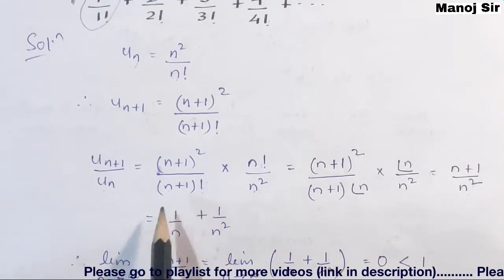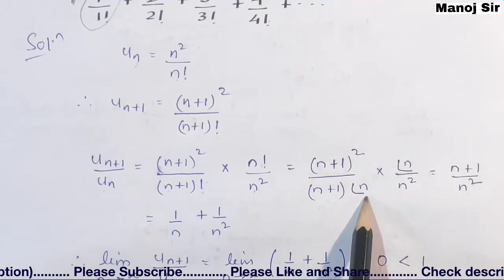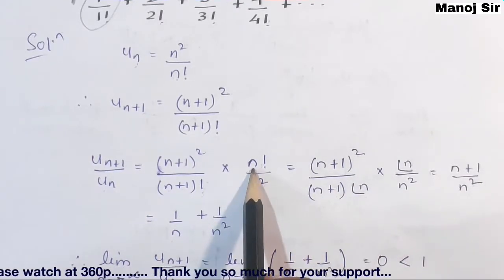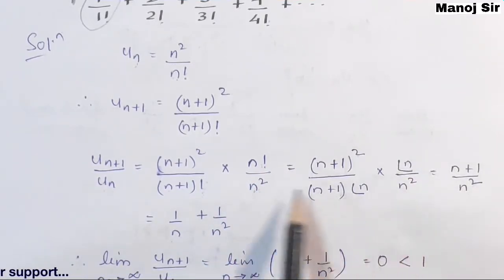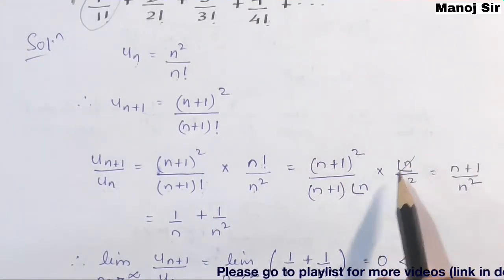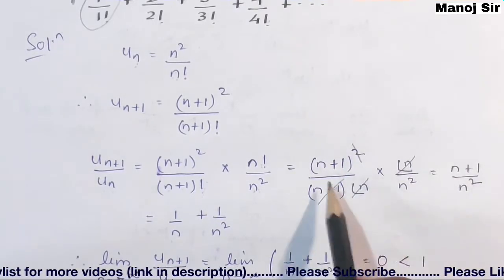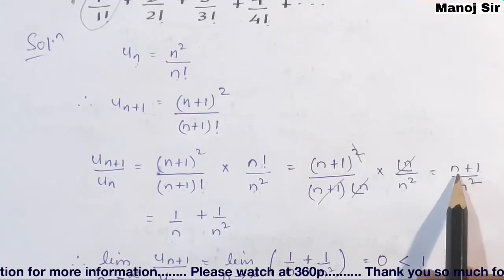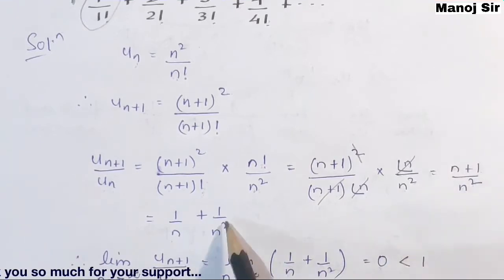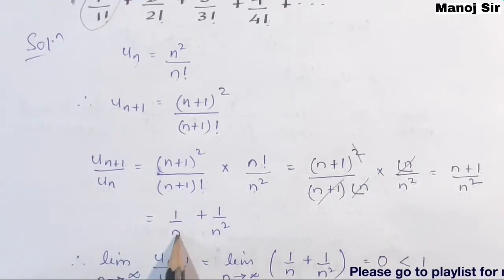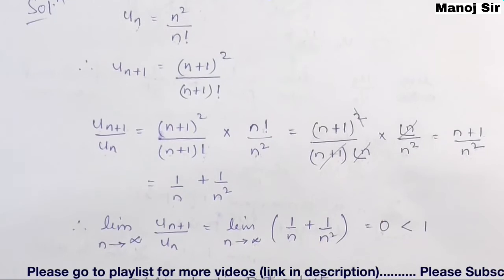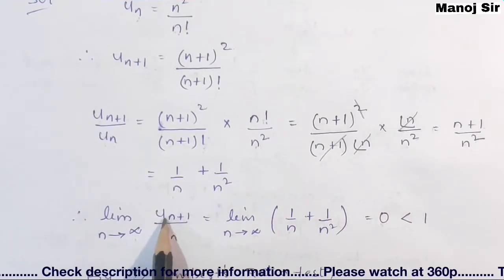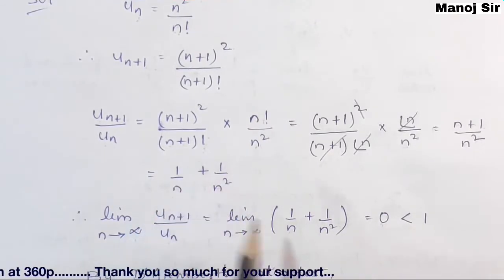Solving: we have (n+1)² in the numerator, with n! also in the numerator, and (n+1)! and n² in the denominator. Now (n+1)! can be written as (n+1)·n!, so n! cancels and one factor of (n+1) cancels with part of the numerator. After cancellation, the numerator has one factor of (n+1) and the denominator has n². Writing this out: (n+1)/n² = 1/n + 1/n². So UN+1/UN = 1/n + 1/n².